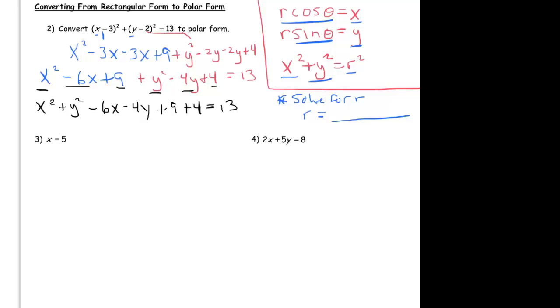So x minus 3 squared is x squared minus 3x minus 3x plus 9, which is x squared minus 6x plus 9.